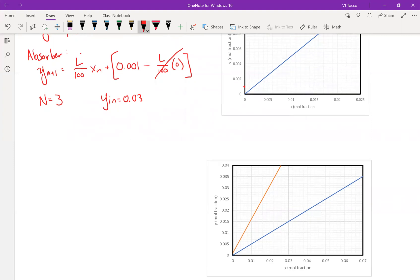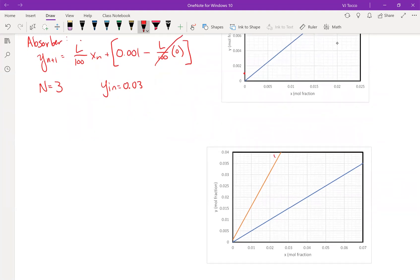So this would be an example of a design type problem where I've specified what n is, but I don't know what L is. And therefore, I have to guess and check. So here in Excel, this is the equation y of n plus 1 is equal to L over V x_n plus 0.001. And I just put in different values of L. So this particular value of L is for 150.